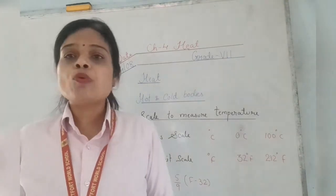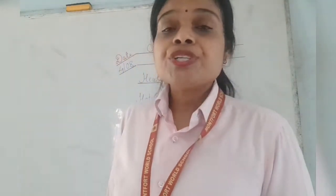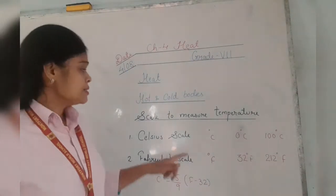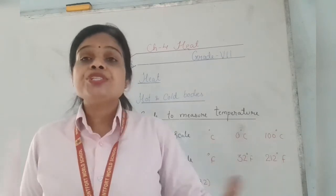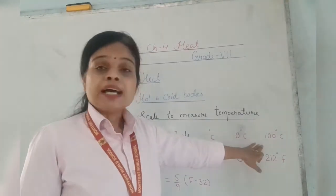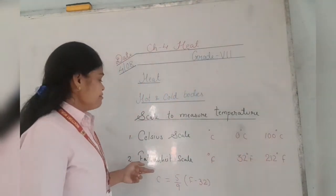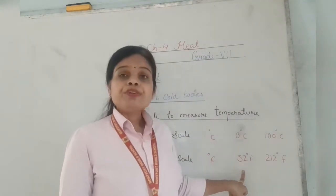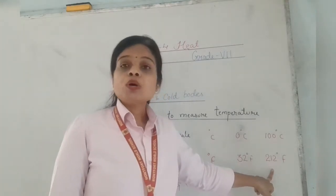We have two fixed points in the Celsius scale. The lower fixed point is zero degrees, at which water changes into ice. The upper fixed point is 100 degrees, where water changes into steam. For the Fahrenheit scale, the lower fixed point is 32 degrees Fahrenheit, and the upper fixed point is 212 degrees Fahrenheit.